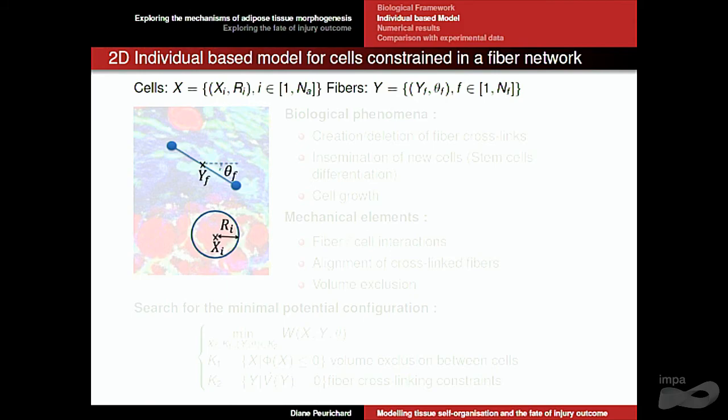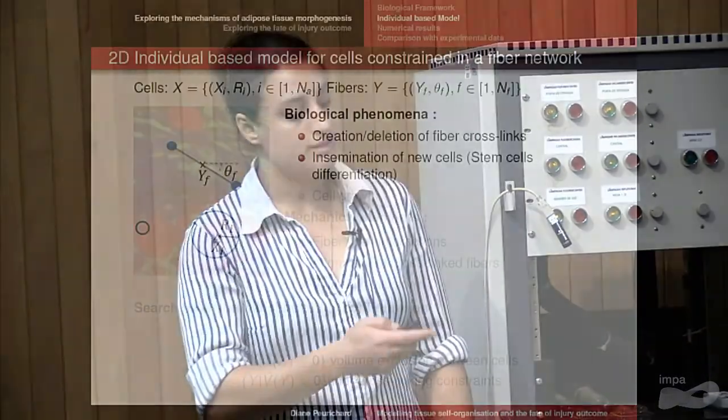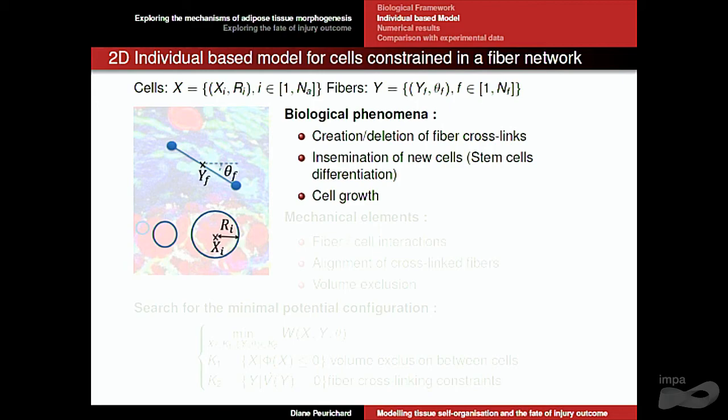Now we decide the heuristic rules — what happens in the tissue according to us. We suppose that two fibres that are crossing have the ability to form a crosslink. This crosslink K will be maintained all along its life; it is created randomly among the set of crossing fibres and can be deleted with frequencies that are parameters of the model. We also consider the insemination of new cells to model stem cell differentiation — the apparition of new cells with a minimal radius — and then model cell growth until a maximal radius, also a fixed parameter.